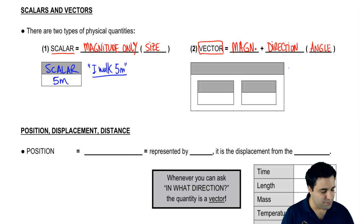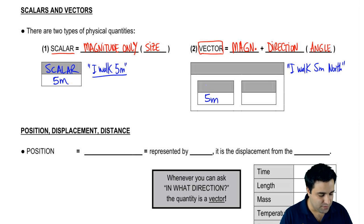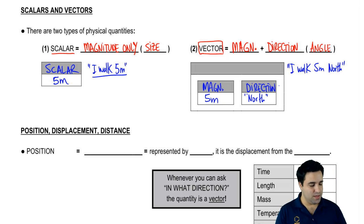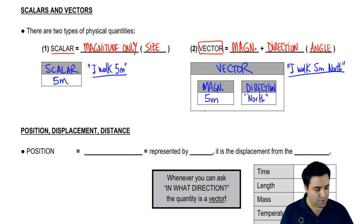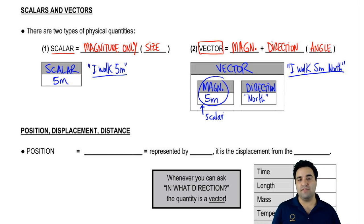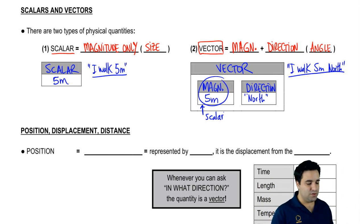Now, if I say instead that I walked five meters north, I'm giving you five meters — the magnitude — and I'm giving you north, which is the direction. Because I'm giving you magnitude and direction, this sentence represents a vector. Notice that magnitude by itself is a scalar, so a vector actually has a scalar in it. I like to think of vectors as a box that contains two pieces of information: a magnitude and a direction.